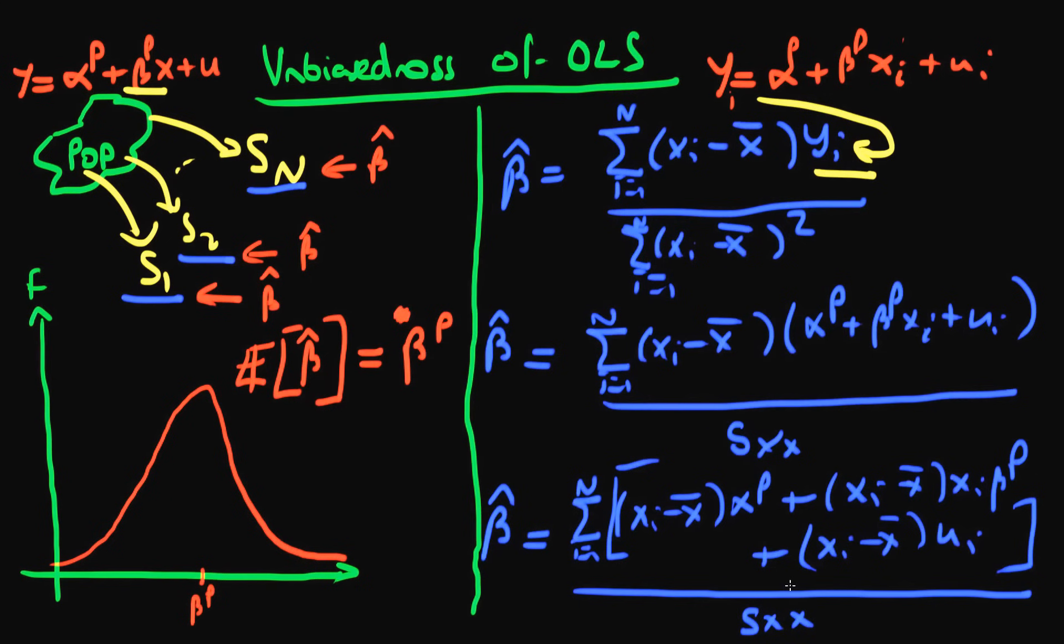It looks like we had something that was quite simple and we've made it more complicated, but I'm going to show in the next video how this allows us to make some headway into proving the unbiasedness of OLS estimators under the Gauss-Markov assumptions. I'll see you then.